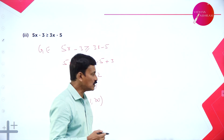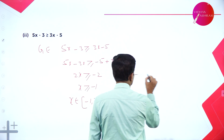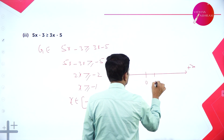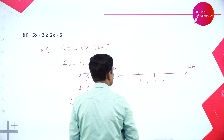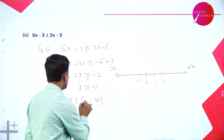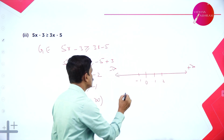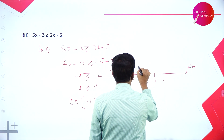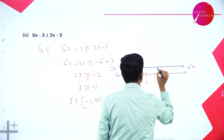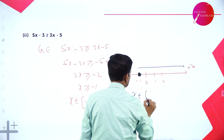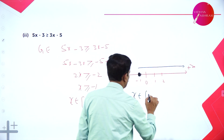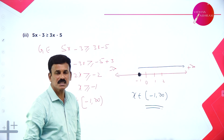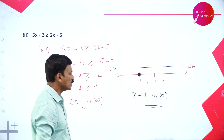On the number line, we represent this as -1 to plus infinity. Marking minus infinity, 0, 1, 2 and minus 1, the solution set x ∈ [-1, ∞) is semi-closed and semi-open, meaning x belongs to -1 comma infinity. This is how we represent it on the number line.